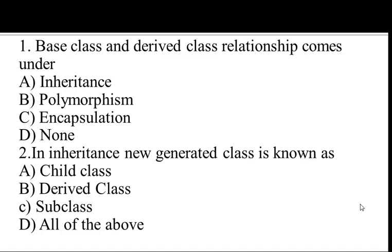Question number 1. Base class and derived class relationships come under — options are: A. Inheritance, B. Polymorphism, C. Encapsulation, D. None. We know that in inheritance we are deriving the child class from the base class. So the answer is A, Inheritance.